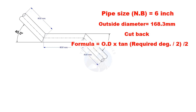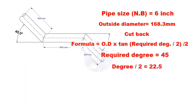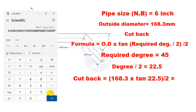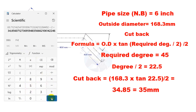Cutback is OD multiplied by tan(half degree), divided by 2. Here, the required degree is 45. Half of 45 is 22.5. Let us calculate. The cutback is nearly 35 millimeters.